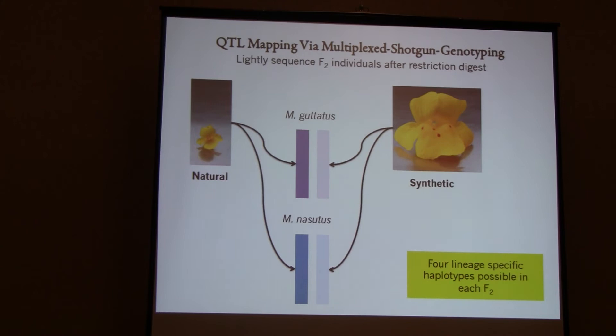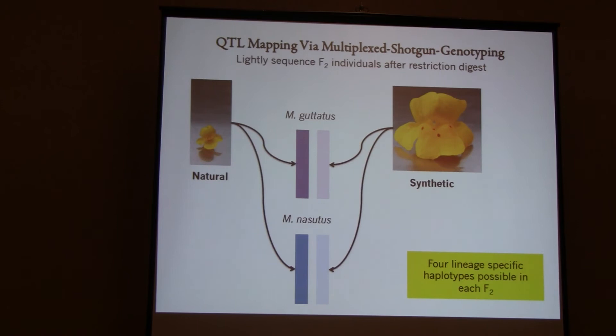I've done QTL mapping via the multiplex shotgun genotyping approach. The basic premise is that you lightly sequence all of your F2 individuals — in this case, 476 F2 individuals plus two of each parent. In each F2 I'm keeping track of four possible haplotypes: the natural tetraploid contributes both the guttatus and nasutus subgenomes, as does the synthetic. Any four of these can be present in any given tetraploid. I also expect the guttatus chromosomes to pair with each other and the nasutus chromosomes to pair — if they don't, that's evidence of homeologous pairing.